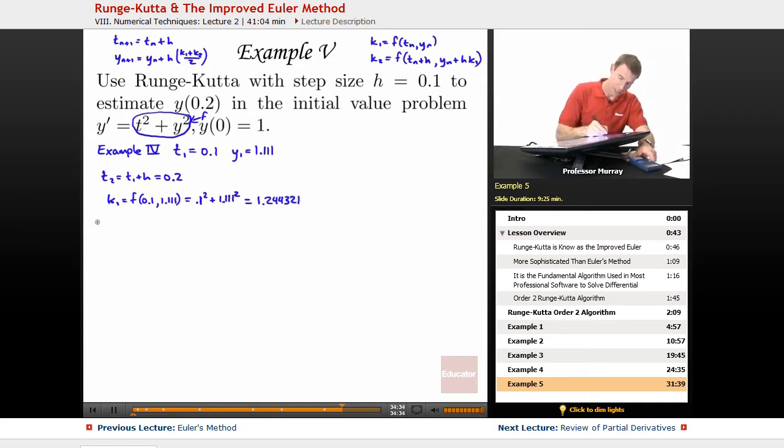I'll save that as a number in my calculator. So k2 is f of (t_n plus h, so 0.2), and now my y_n, that's y1, so 1.111, plus h is 0.1 times k1, which is 1.244321.